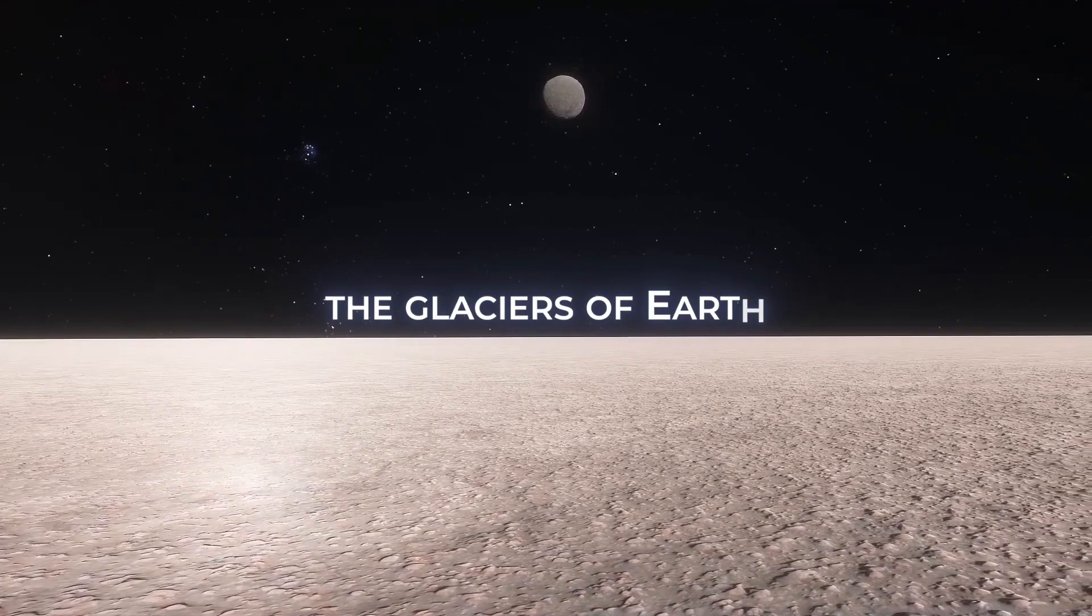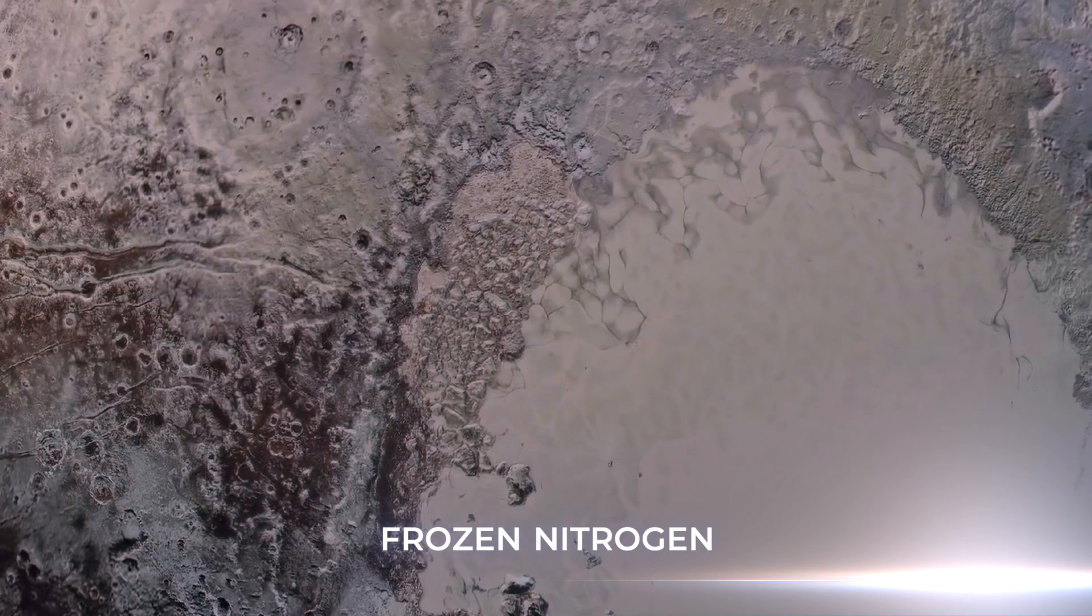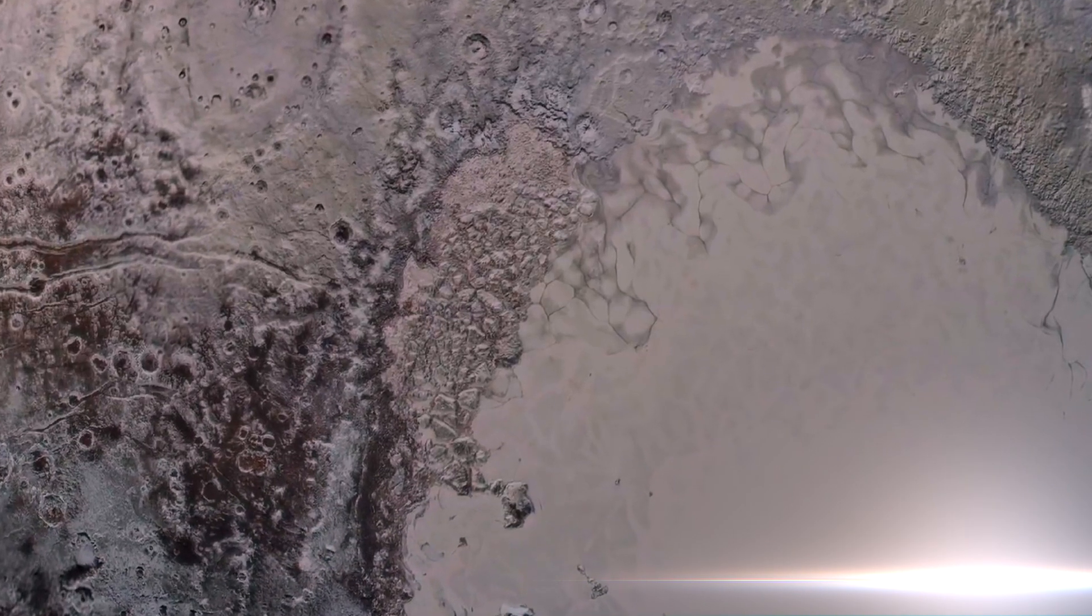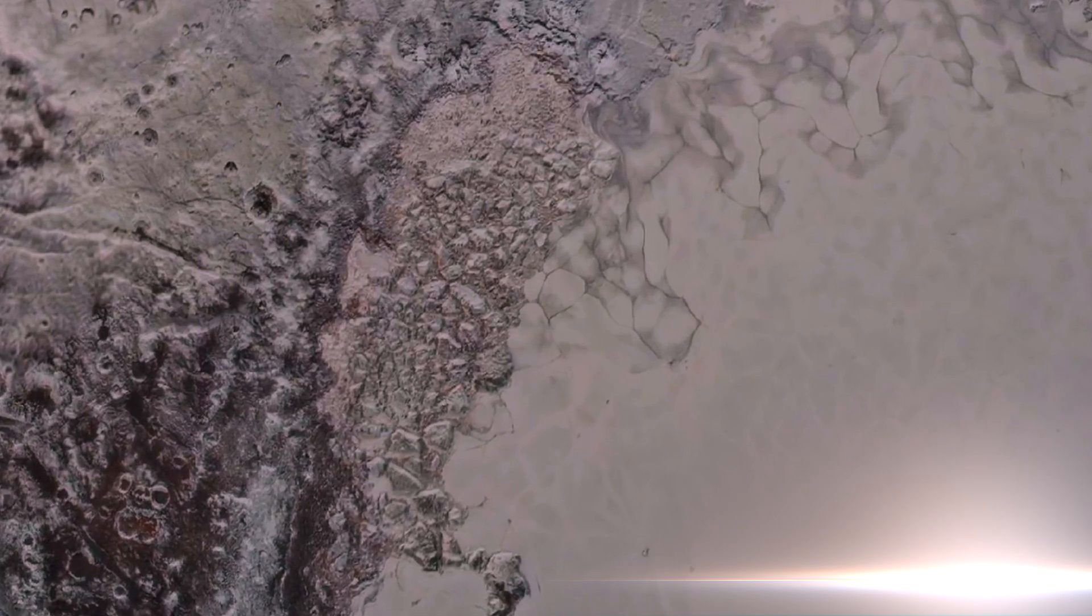Sputnik Planitia mostly resembles the glaciers of Earth, except that it is made of frozen nitrogen, not water ice. But, like a glacier, the nitrogen ice of Sputnik Planitia moves and flows, albeit very slowly.